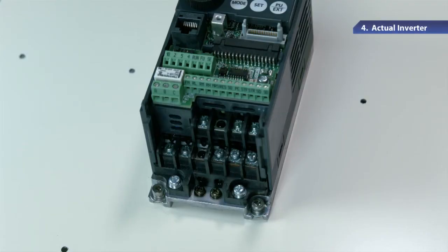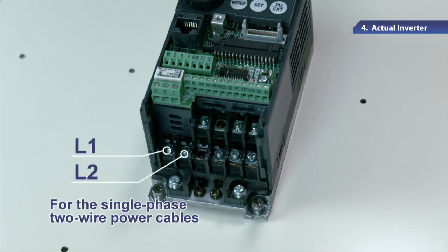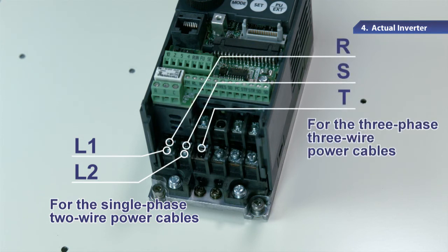First, please make sure the power is off. Then, connect the power cords to the inverter terminals. Connect the single-phase, two-wire power cables to the main circuit terminal L1 and L2. Connect the three-phase, three-wire power cables to the main circuit terminals R, S, and T.